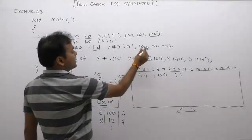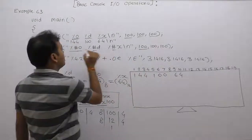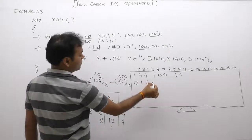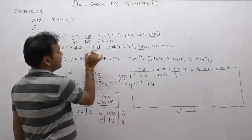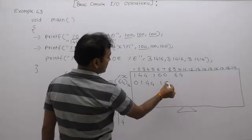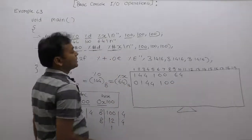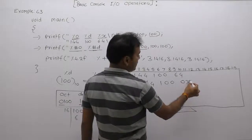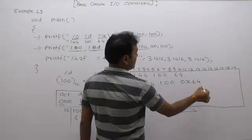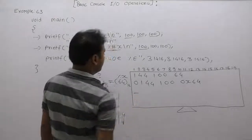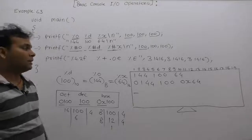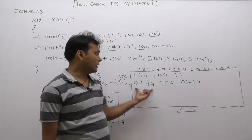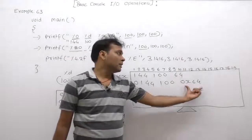We supply the same values: 100, 100, 100. First, 100 will be displayed in octal — its equivalent octal value is 144, so it displays as 0144. Then a space, and the same value is displayed in decimal. Next, using %#x, the same value is displayed in hexadecimal, starting with 0x, giving 0x64. The cursor moves to the next line. Now we can easily identify: 0144 is octal, 100 is decimal, and 0x64 is hexadecimal.